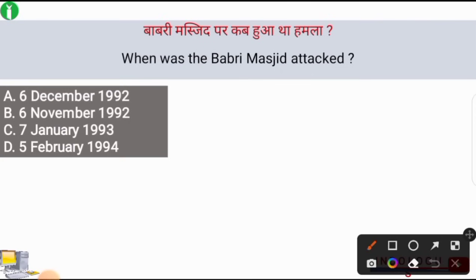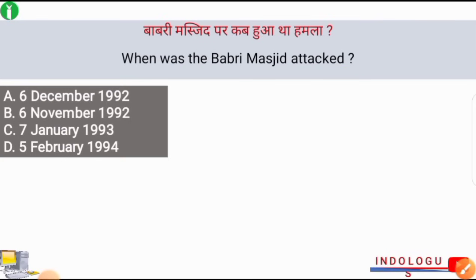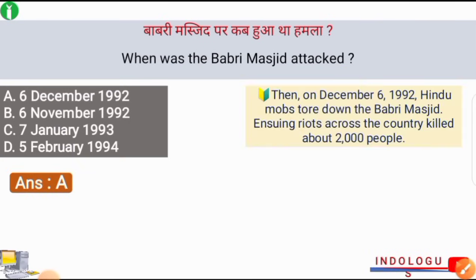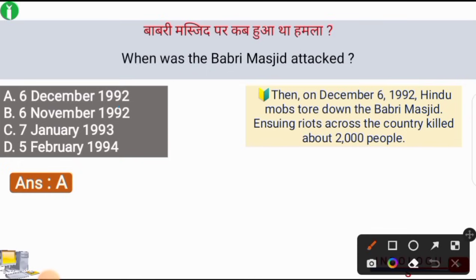When was the Babri Masjid attacked? The correct answer is option number A, i.e. 6th of December 1992. On 6th of December 1992, Hindu mobs tore down the Babri Masjid, ensuing riots across the country that killed about 2,000 people.